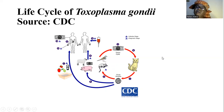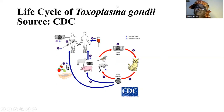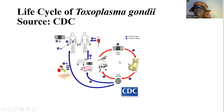When rats and birds have contact with this plant material or soil particles in the process of feeding, they ingest the sporulated oocysts. And in their tissues, they become the slow-growing bradyzoites.